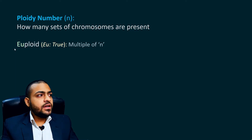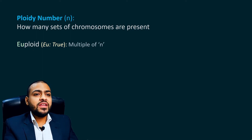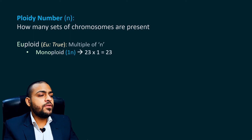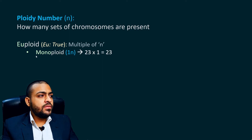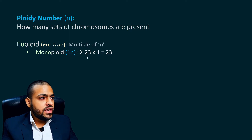There is a related term called euploid. 'Eu' means true; ploidy means how many times something is present. A chromosome number is said to be euploid when it is a multiple of n. For example, one type of euploid is monoploid. Mono means one, so monoploid means we are having one set of chromosomes — 23 multiplied by 1. It is a multiple of n; here 23 is n, and 23 multiplied by 1 is 23.